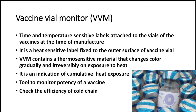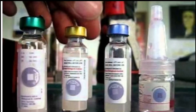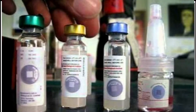The vaccine vial monitor is used to check the efficiency of the cold chain. It is a heat sensitive label that changes color gradually on exposure to heat. Here is an example of different vials which have the vaccine vial monitor.